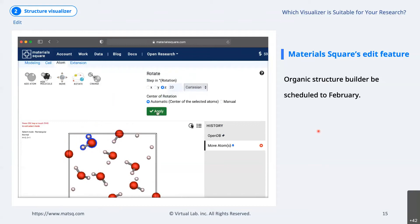Until now, the functions of Materials Square have mainly focused on the materials such as crystal structure, but from February, organic structure builder, which can easily draw molecules and polymers, is scheduled to be released.